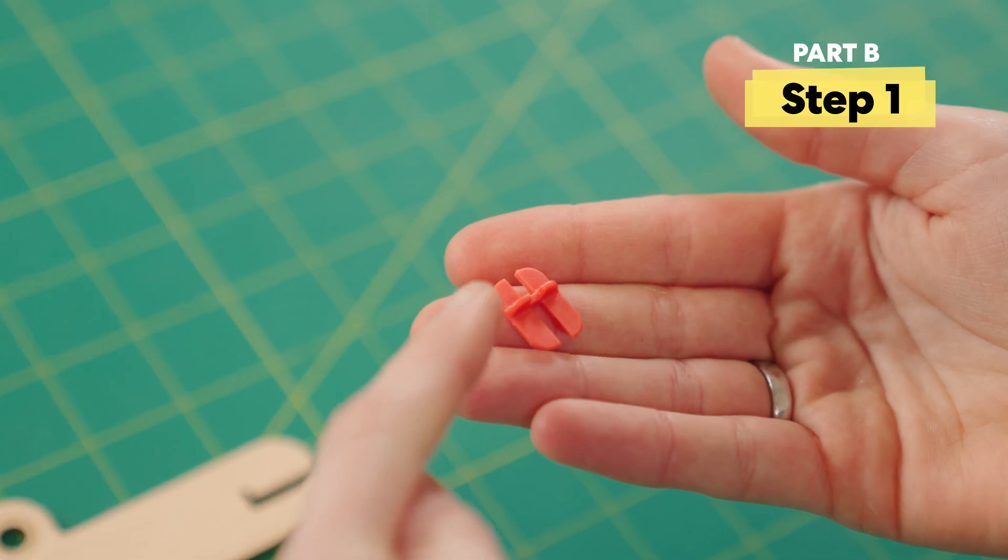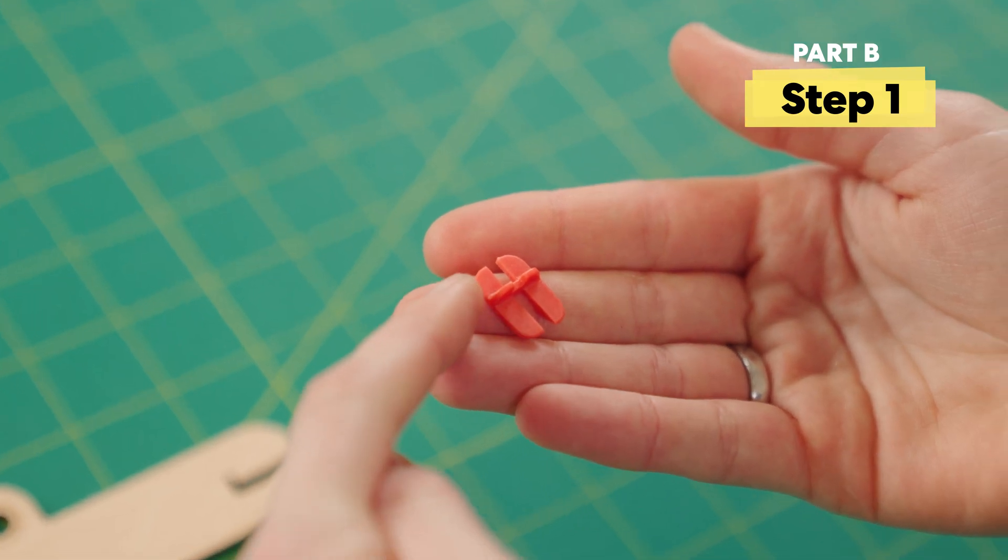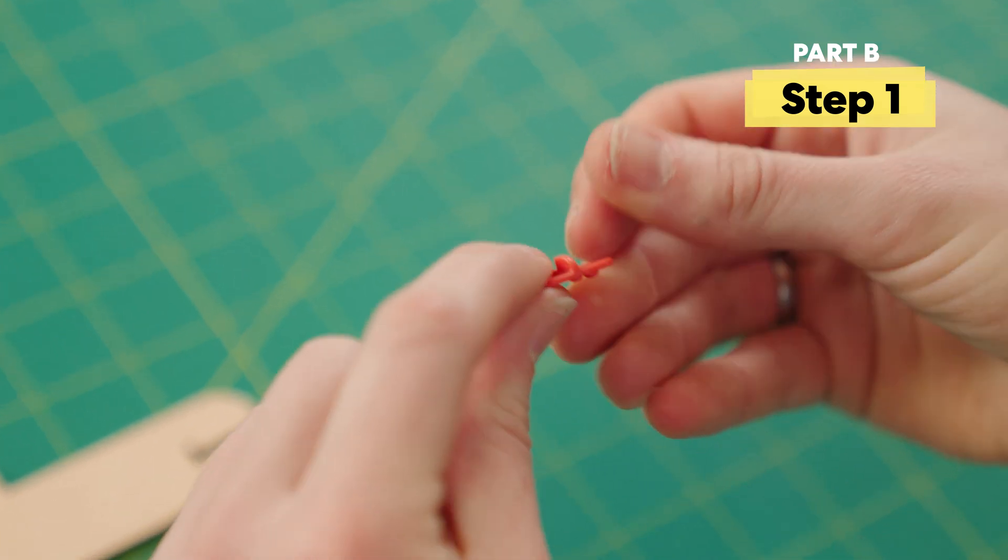Alright, first, grab this little orange piece that looks like the letter H. Notice that there's a short side and a long side, and little prongs that stick up.